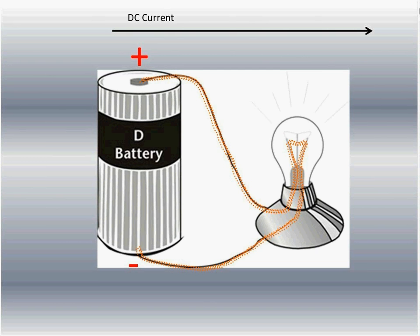When we have DC current, we're going from positive to negative and moving in one direction only.